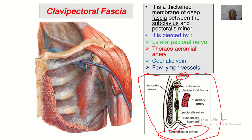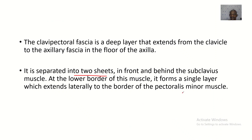Using this anterior view image, you can see that it begins under the clavicle, then opens up to enclose the subclavius muscle, then joins again, then opens again to enclose the pectoralis minor muscle, then joins again before attaching at the axillary fascia. At the lower border of the subclavius muscle, it forms a single layer which extends laterally to the border of the pectoralis minor muscle.